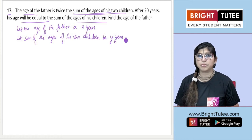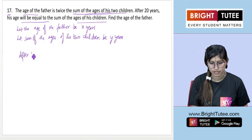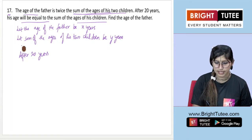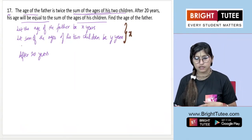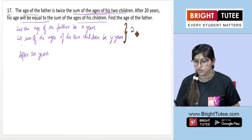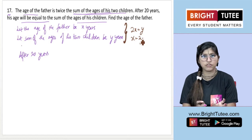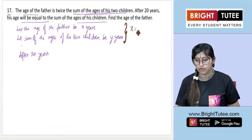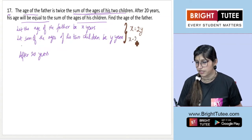Age of the father is x years, and let the sum of the ages of his two children be y years. Now, the first condition says the age of the father is twice the sum of the ages. Students often get confused whether to write 2x = y or x = 2y. The logic is: whatever is stated first, write it down first. Age of father is x, 'is' means equals, 'twice the sum' means 2y. So our first equation is x = 2y, or x minus 2y equals 0.